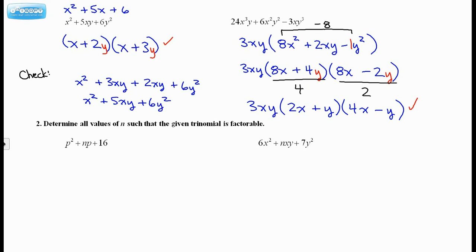Number 2, determine all values of n such that the given trinomial is factorable. Okay. So I have p squared plus np plus 16. It doesn't matter that this is a p. You could also think of this as x squared plus nx plus 16. So n is just some unknown number. It could be 8, could be 7, could be 5,000. We don't know. So we want to determine what values can n actually be such that this trinomial is factorable. Because if you're to choose any random number for x, you might not be able to find two numbers that multiply to 16 but add to n. So how do we know this will work? Well, remember, we always want to find two numbers that multiply to the last but add to the middle whenever this leading coefficient is a 1.